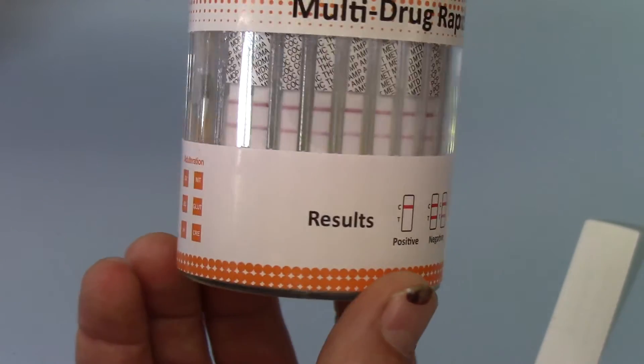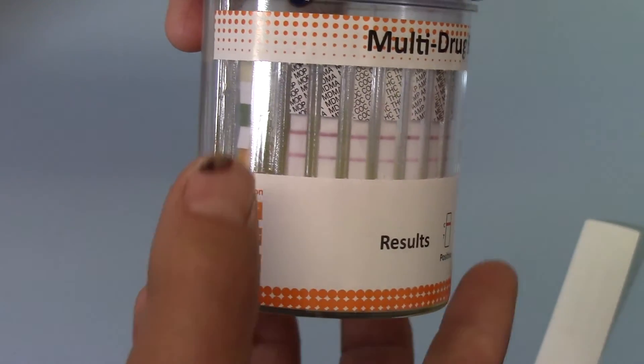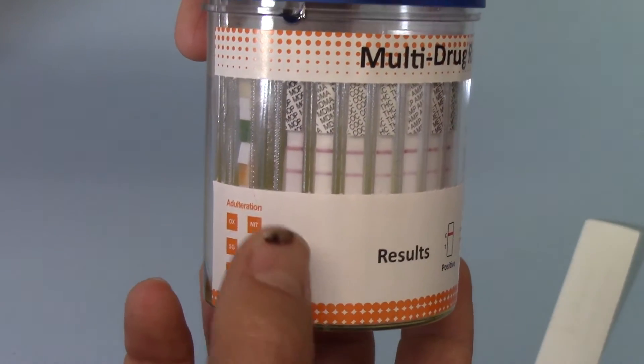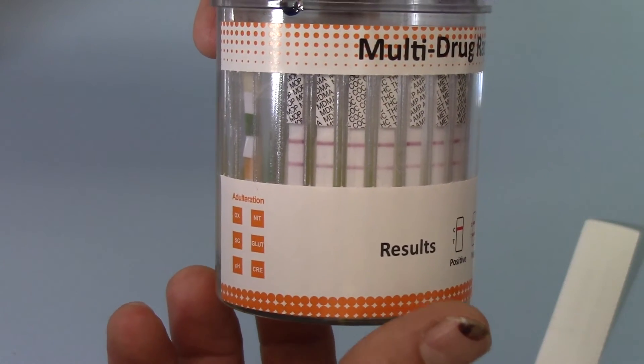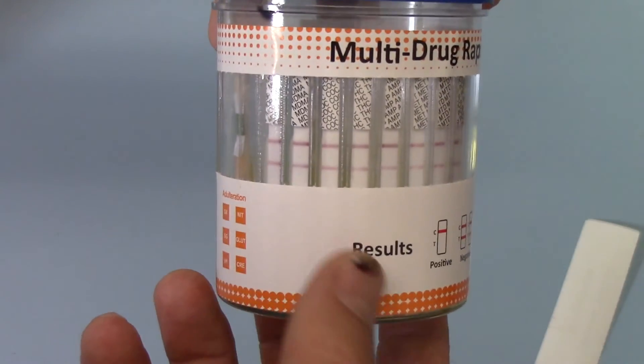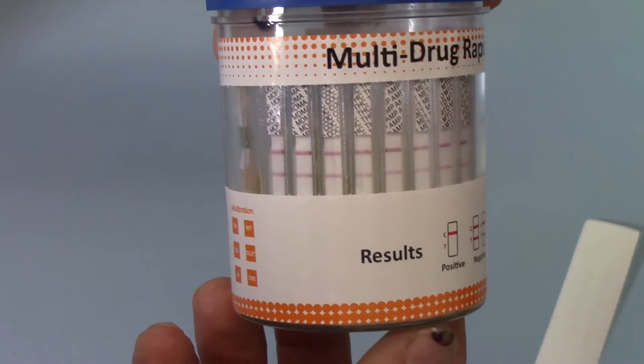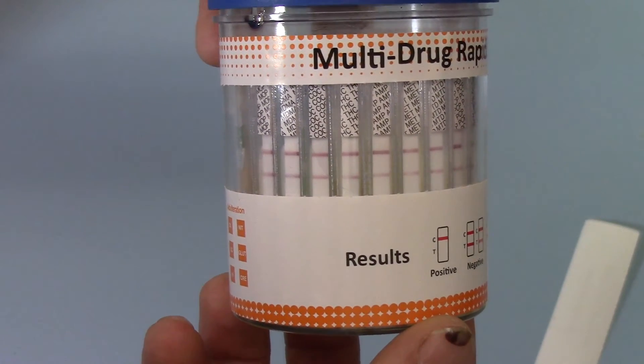And if we just run you through the abbreviations in here, you've got MOP for opiates at 300 nanograms, MDMA for ecstasy, methyl deoxy, methamphetamine, COC for cocaine, and that will also screen for crack cocaine, THC for cannabis.